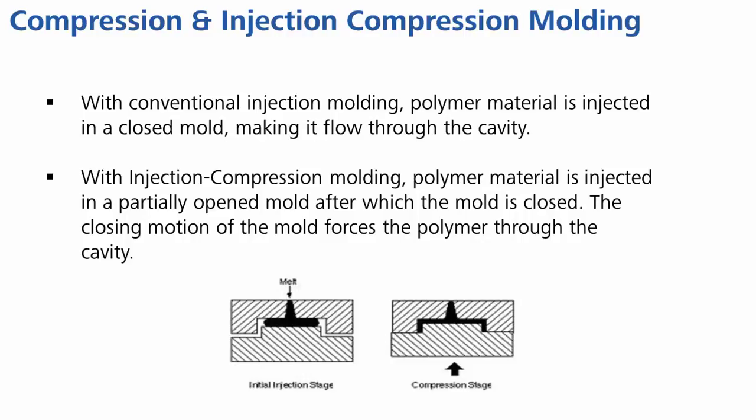Compression molding is a variation of this process, whereby the plastic is not injected but placed in the mold cavity, and again the closing action will force the material to flow through the cavity. The size and placement of these so-called charges will greatly influence how the part is formed.